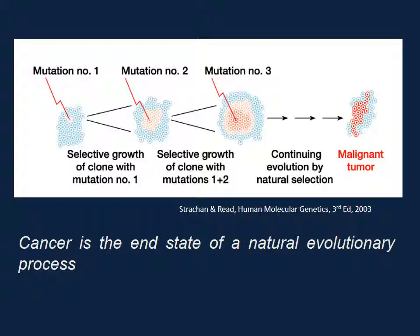Cancer is the end state of a natural evolutionary process. There have to be several sequential mutations that must occur in the DNA that lead to the malignant tumor. This makes it a little bit confusing for us in terms of what mutation to target, and that is one of the things that we're learning. But we are making progress.